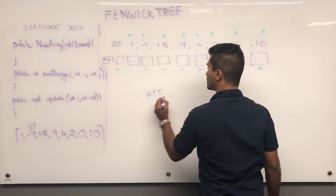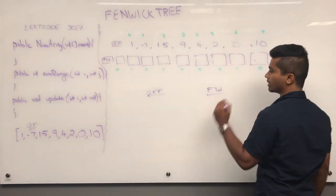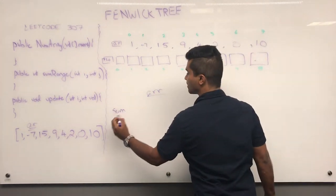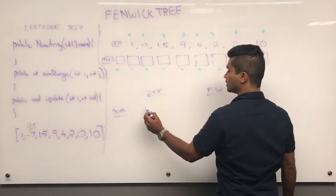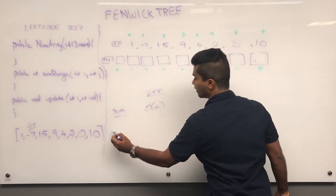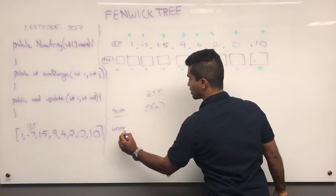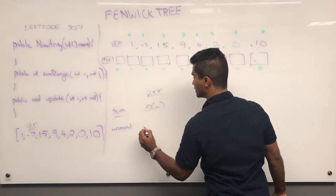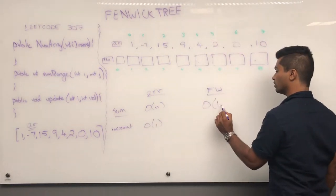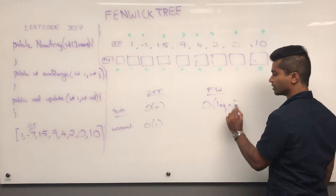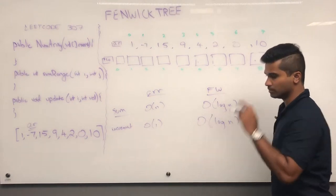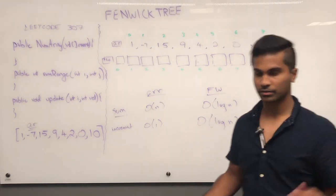With a regular array, sum is O(n) and increment is O(1). With a Fenwick Tree array, sum is going to be O(log n) and increment is O(log n) as well. That's the improvement and that's the trade-off.